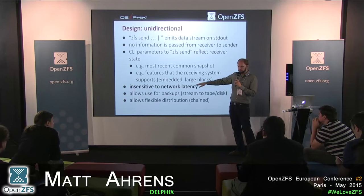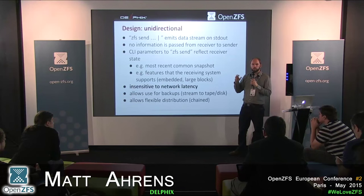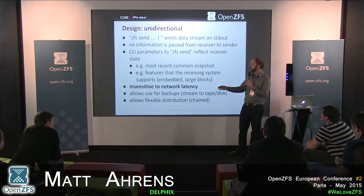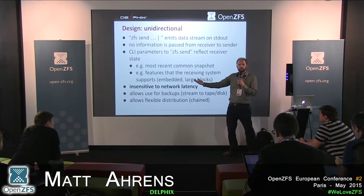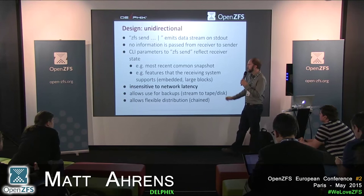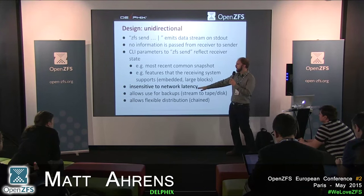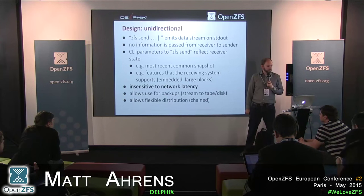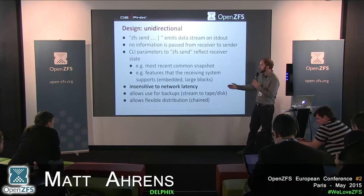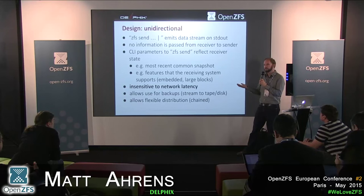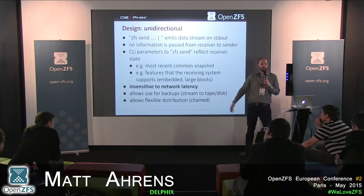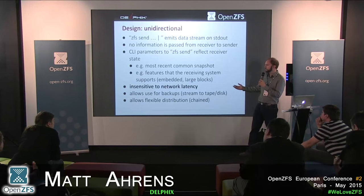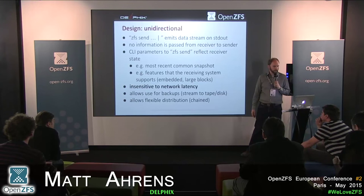The send stream over the years has gotten new over-the-wire features — like large blocks and embedded blocks — that both systems need to support. But the key consequence of unidirectionality is insensitivity to network latency. You can use it for backups by just spitting the stream to a tape or hard drive for archival, then feeding it into ZFS receive later. It also allows flexible distribution models where you can send from one system to another to another.